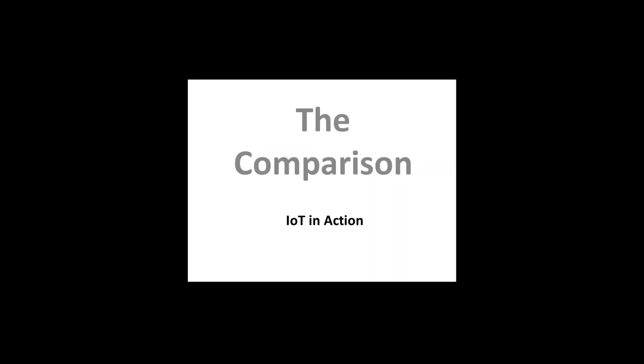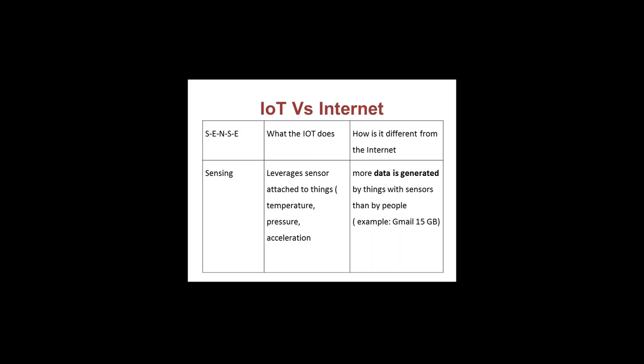Now let us compare IoT with the existing internet system. We have been used to the Internet for the last 20 to 25 years, so our minds think in terms of internet. IoT is actually an extension of that, but it goes beyond connecting people and computers to get connected to everything. Let me explain the key differences between the internet and IoT.